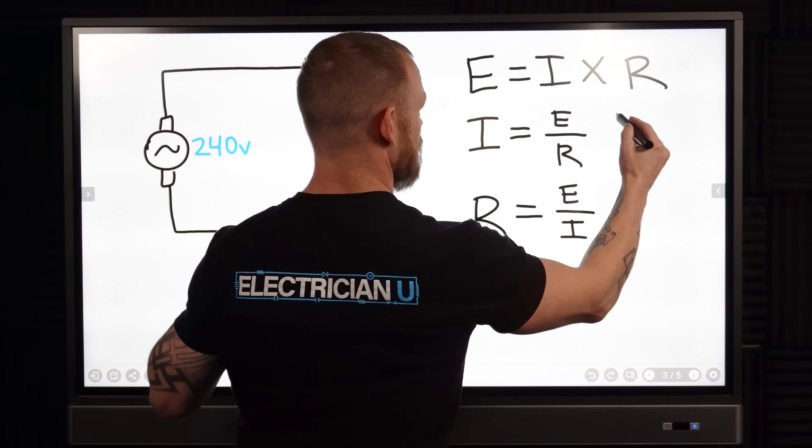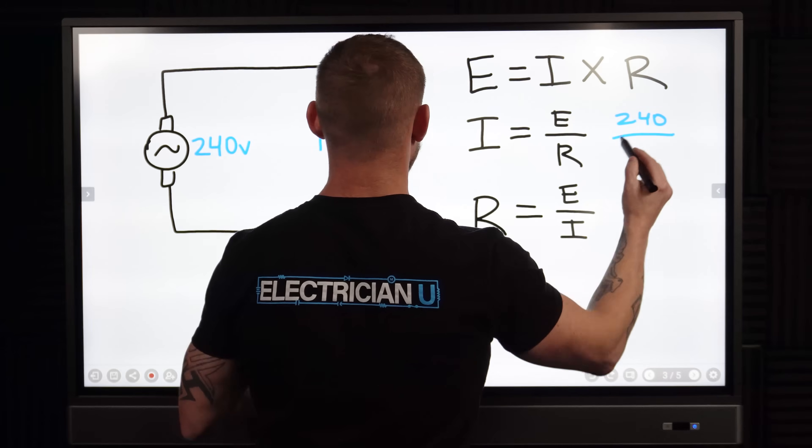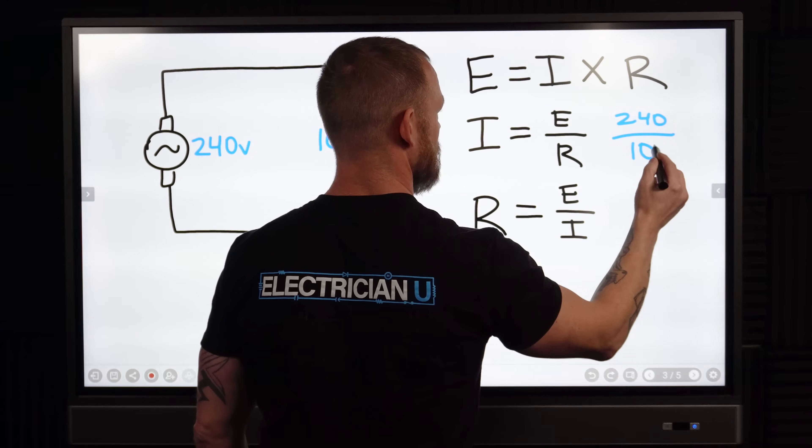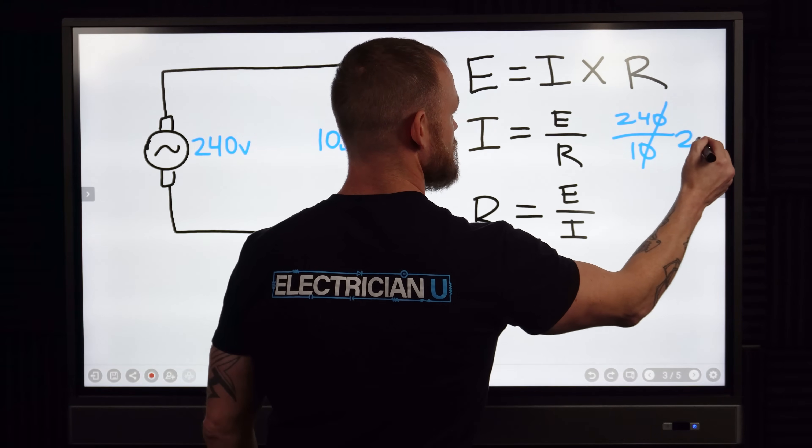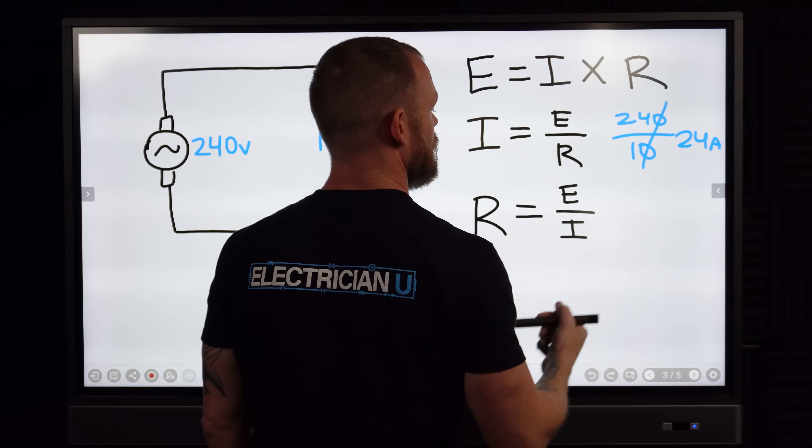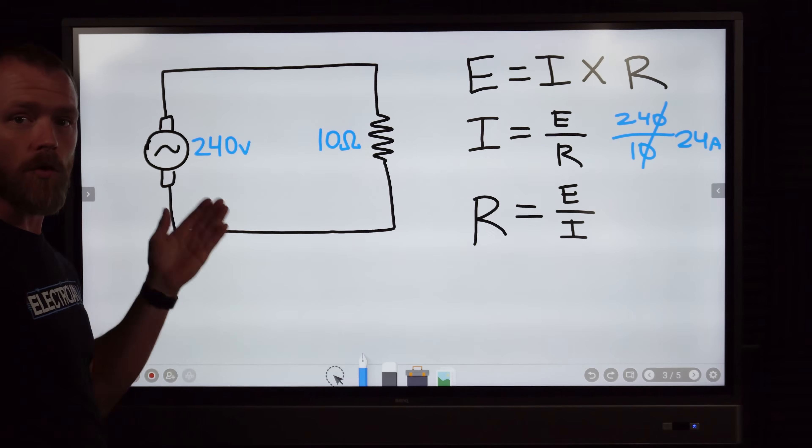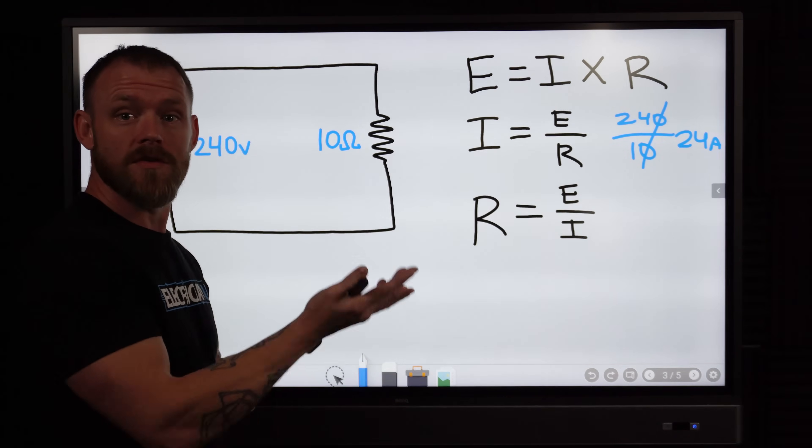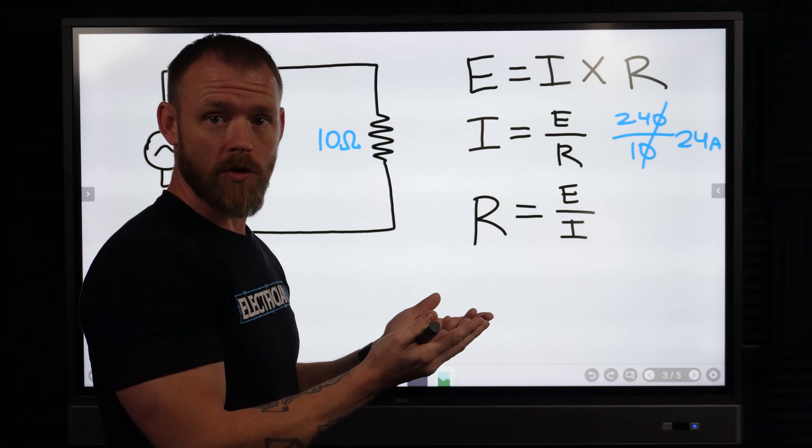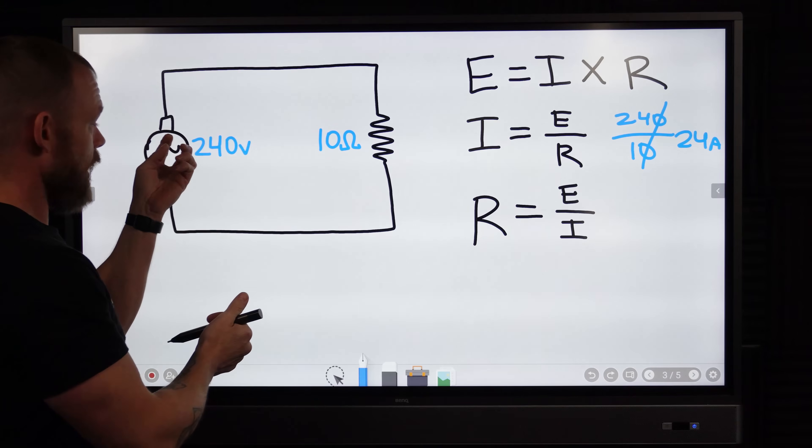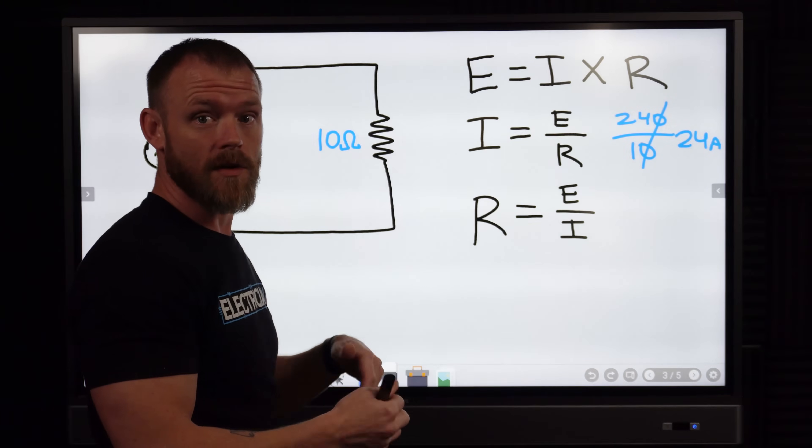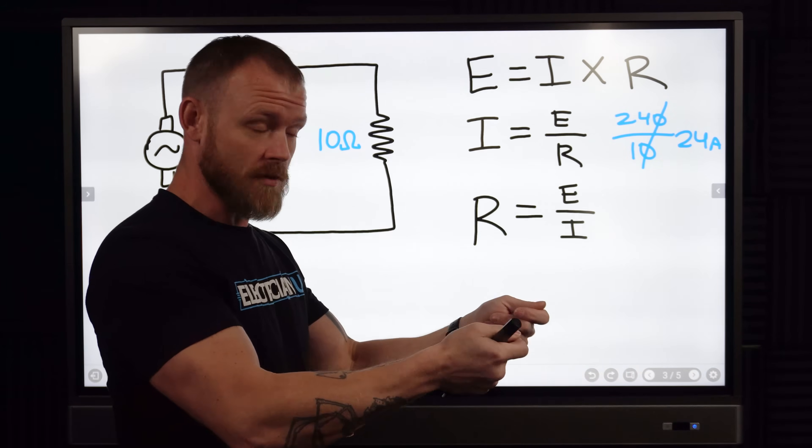So we have 240 volts and we have a resistance of 10, zeros cancel out, we get 24 amps. So our amperage has increased because our voltage has increased. So those two values are directly proportional. If you raise your voltage, the current flowing through the circuit is always going to be more if the resistance stays the same in both scenarios.